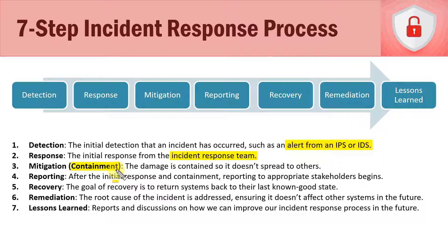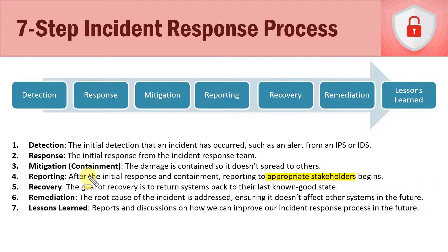Once we've done that initial containment, we move to step four, which is called reporting. This is a bit of a misnomer, because it's not just reporting on what's taken place so far — reporting should actually start at the beginning with the detection. When the initial person gets a call or an alert from an IPS or IDS, they need to start recording that into some sort of a tracking system. The reporting in step four is reporting to the appropriate personnel — specifically the appropriate stakeholders — because at this point we have a good idea of what the incident is and what effect it's going to have on the organization.